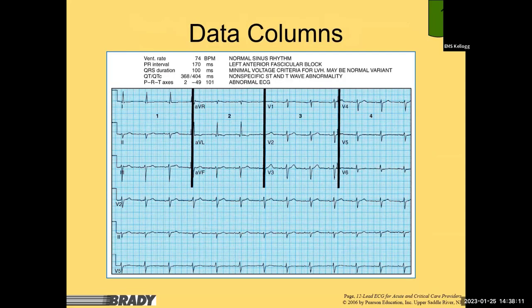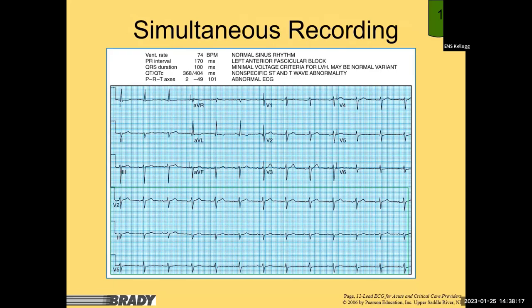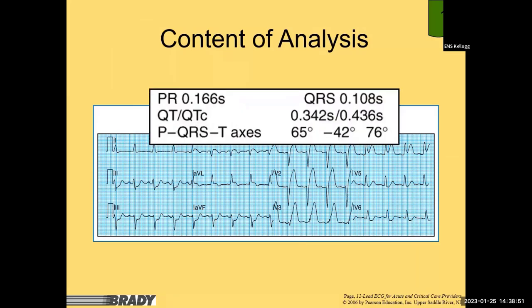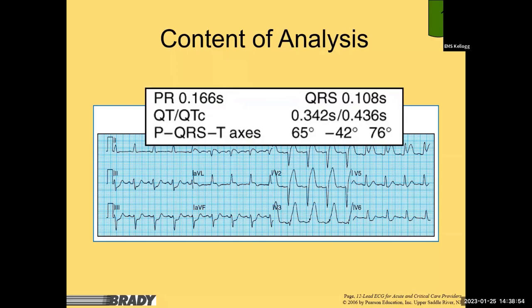The content for analysis must be approached systematically. Analysis starts with numerical values and then flows through your assessment of hemiblocks and bundle branches. Start with that numerical value — when you look at the PRI and see 0.17 seconds, you can quickly determine if it's normal (0.12 to 0.20 seconds is normal PRI). Your monitors are almost all defaulted to milliseconds.